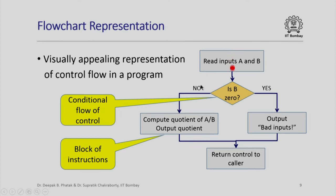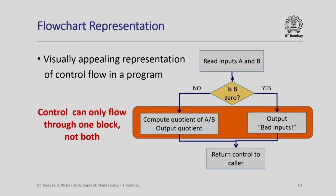An animation shows how control flows when b is non-zero, and another shows how control flows when b is 0. What you observe is that control can only flow through one of these two blocks but not both — this is a salient feature of conditional execution: depending on the condition, one block or the other is executed, not both.